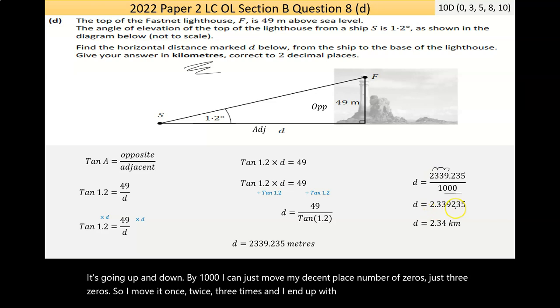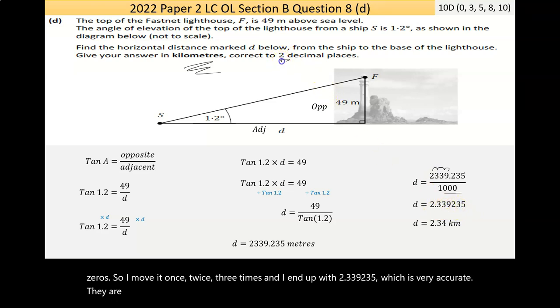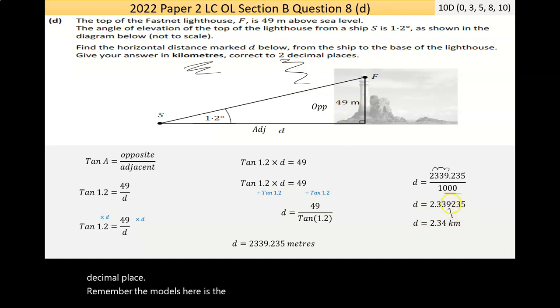And I end up with 2.339235, which is very accurate. They asked me to leave my answer to only two decimal places. So, that's the second decimal place. So, the number that matters here is the nine. Nine is greater than five. The number of four rounds up by one. And I get 2.34 kilometers.